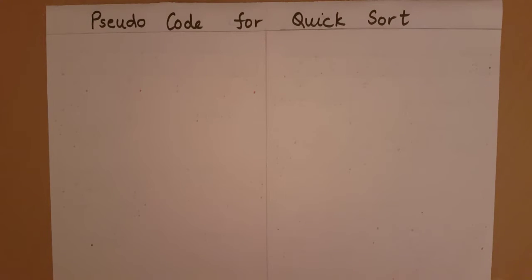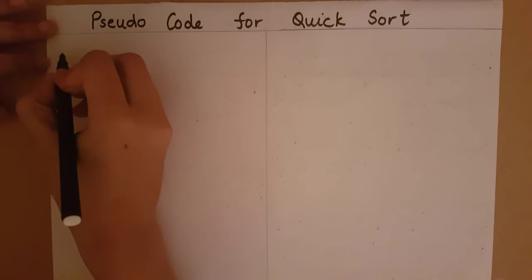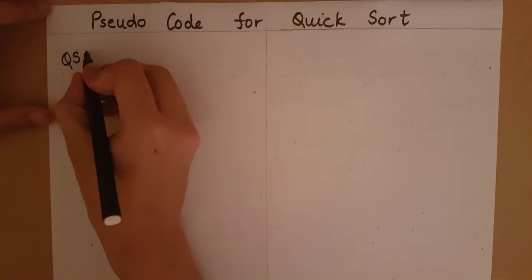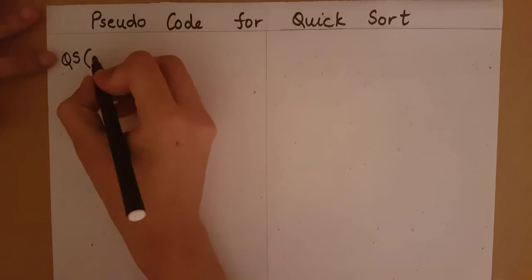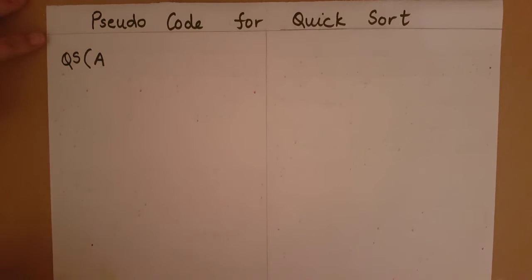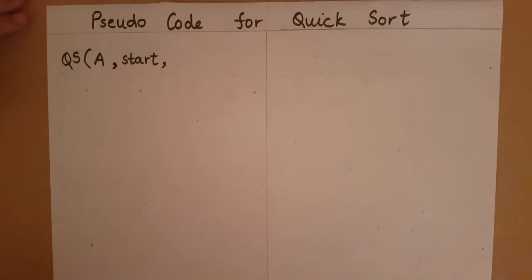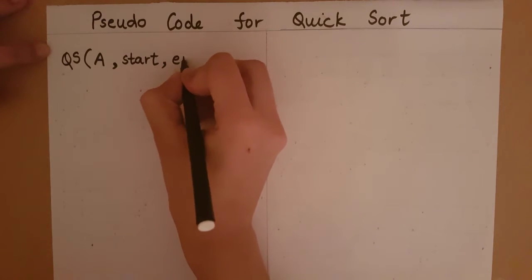Pseudo code for quicksort. Quicksort is an algorithm which takes in an array and sorts it. The input to quicksort will include an array, the starting index of the array, and the ending index of the array. The parameters we would include are the array, say 'a', the starting index 'start', and the ending index 'end'.